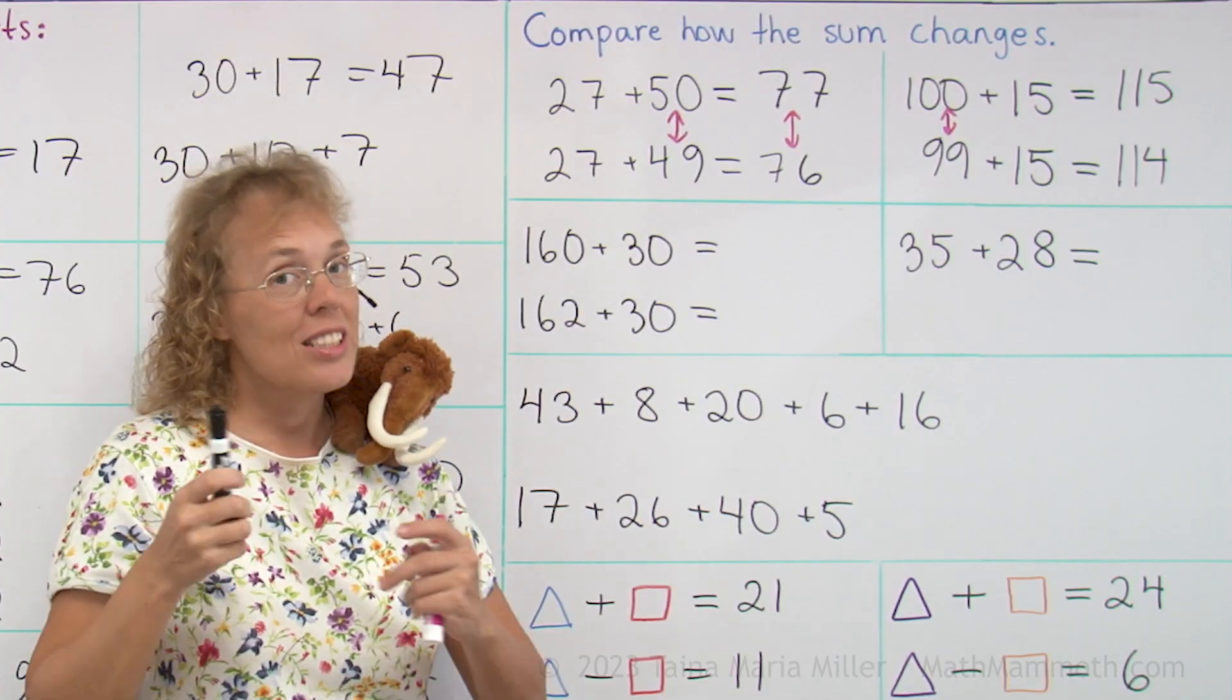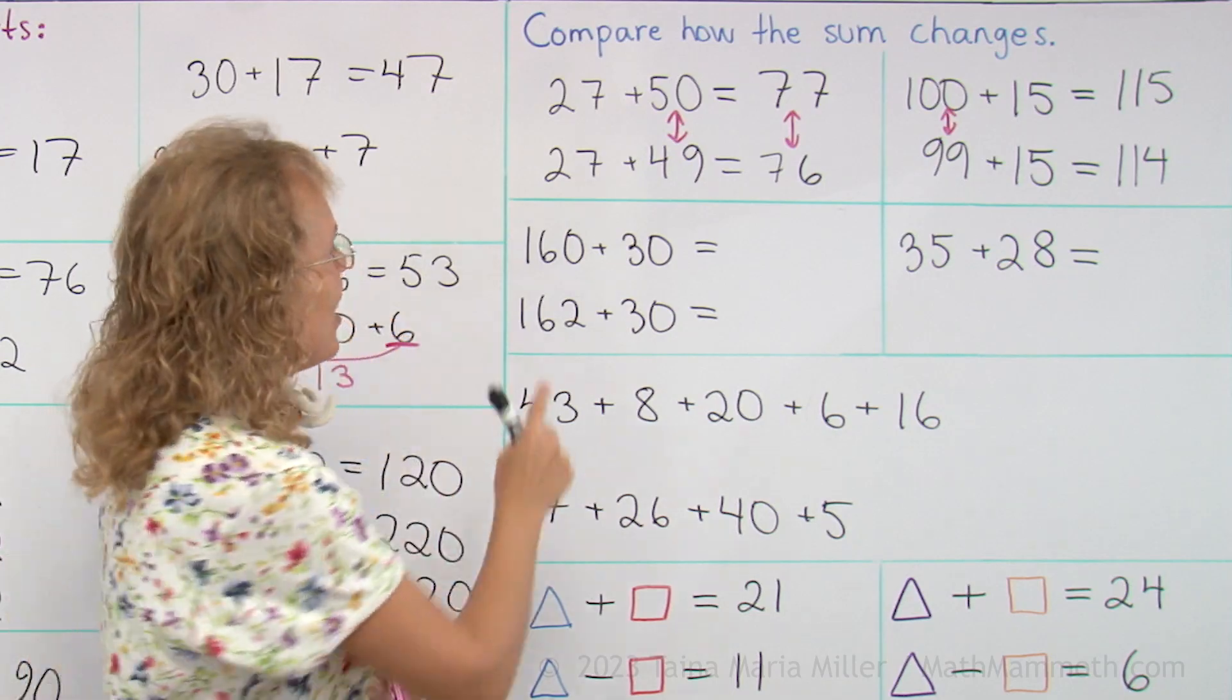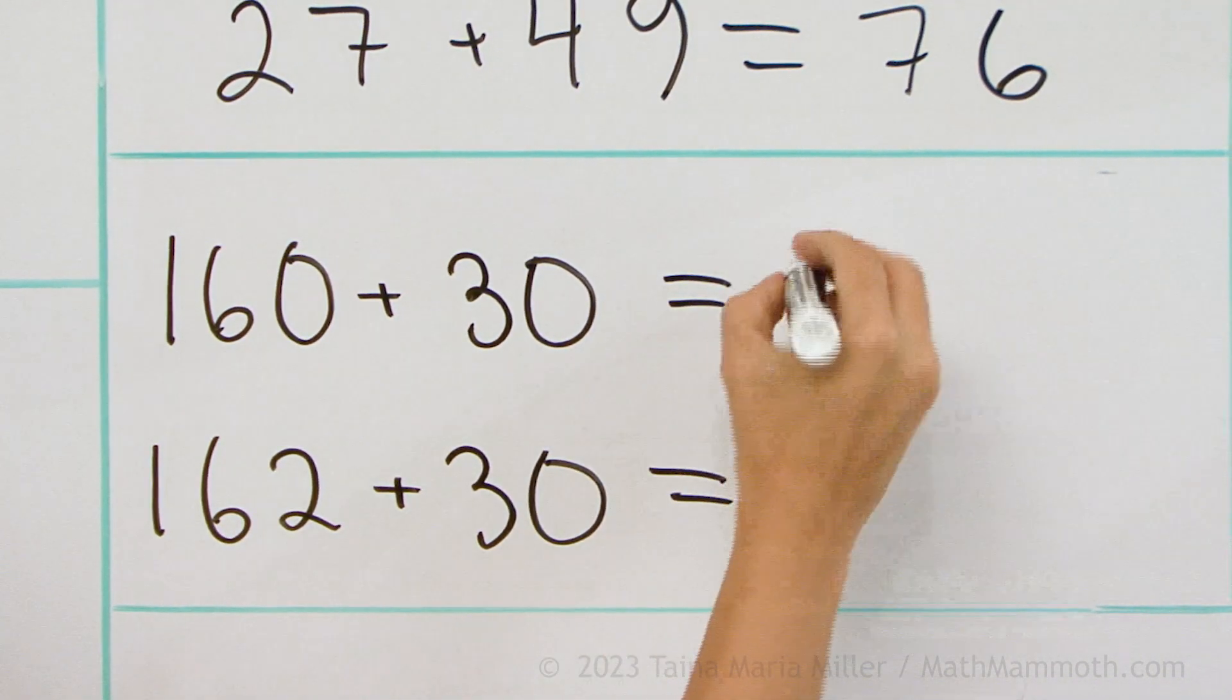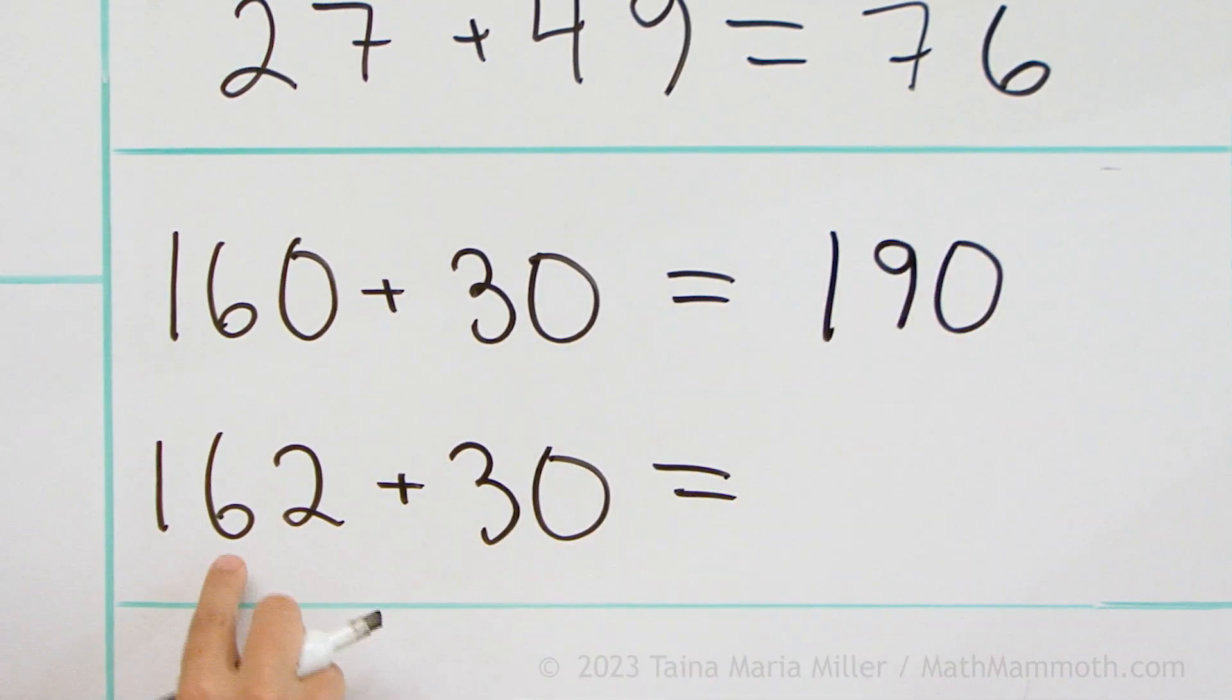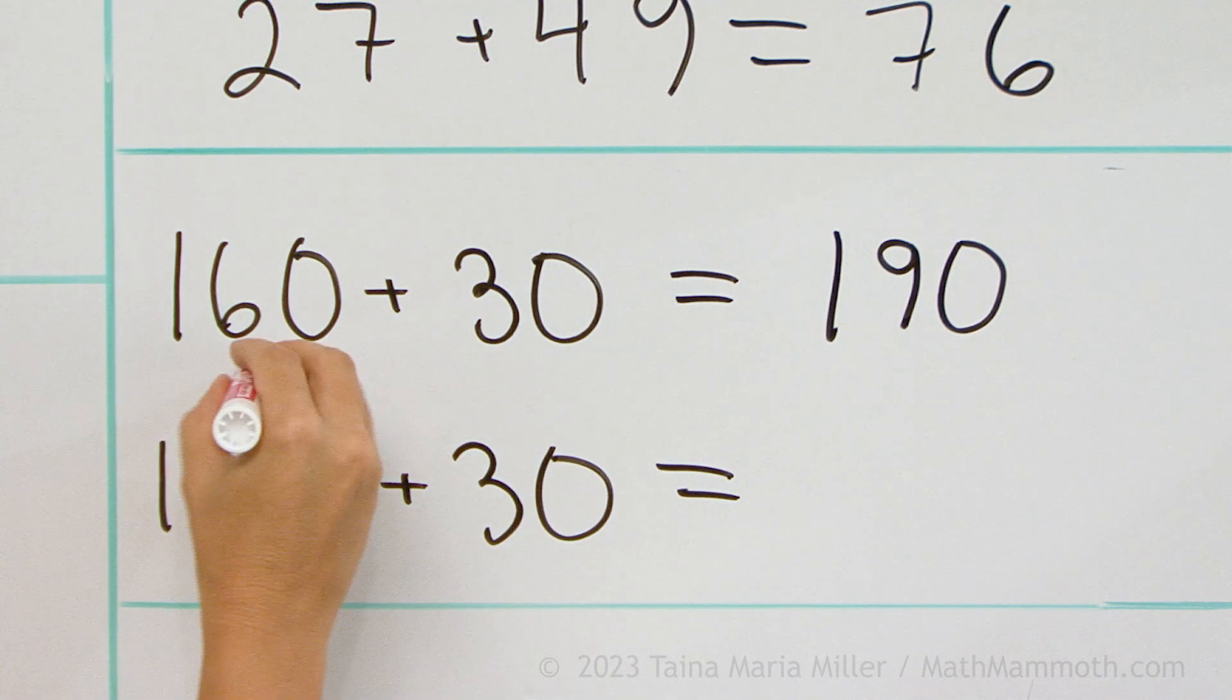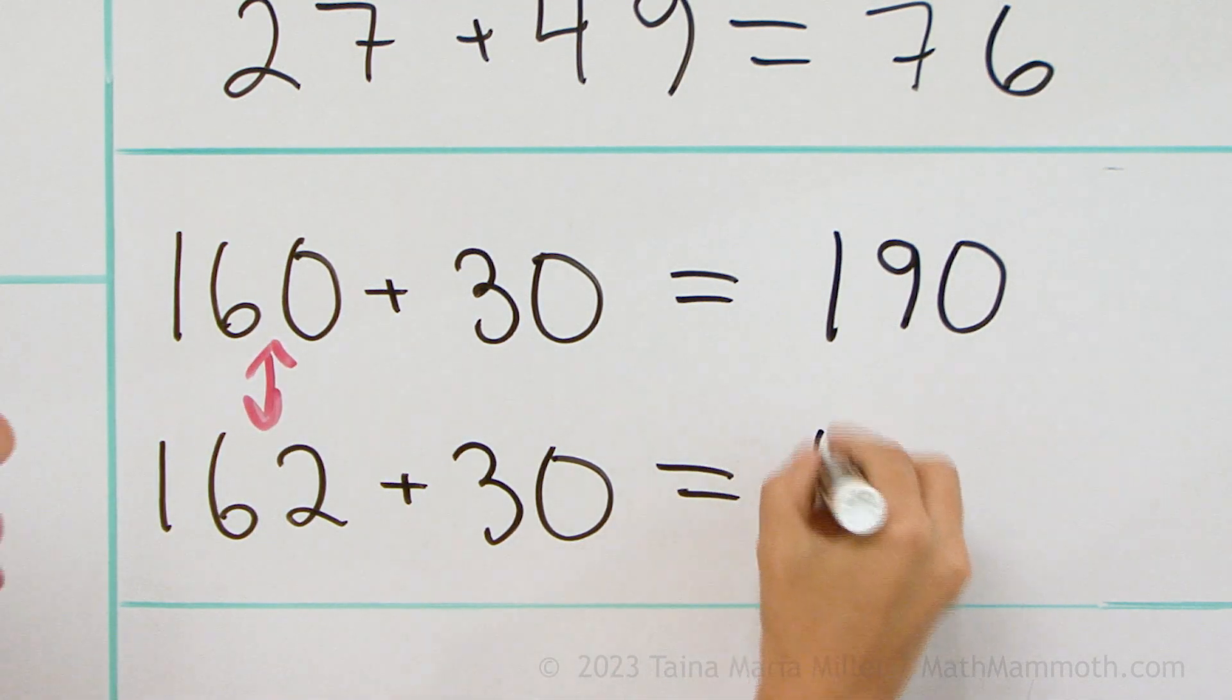And you can use this same idea the other way too. If you have 160 plus 30, that's 190. Then this one is two more, right? You compare those two, so the answer is two more.